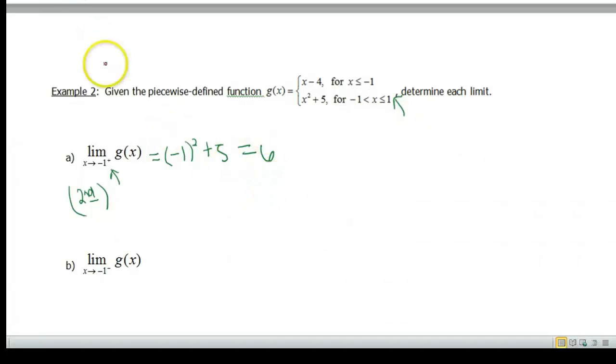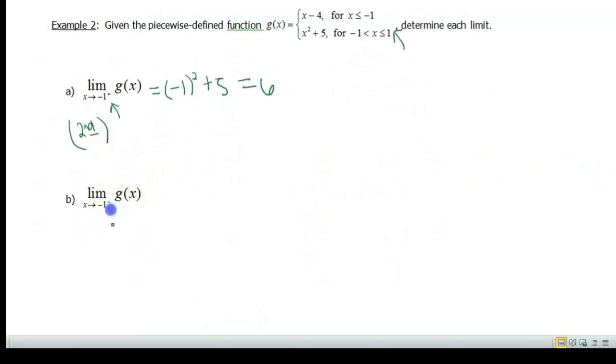Now as we're approaching from the left, and you notice here there's a little minus sign. What kind of numbers are to the left of negative 1? Well, these are numbers that are smaller than negative 1. So obviously for this one, I'm going to be using the first function.